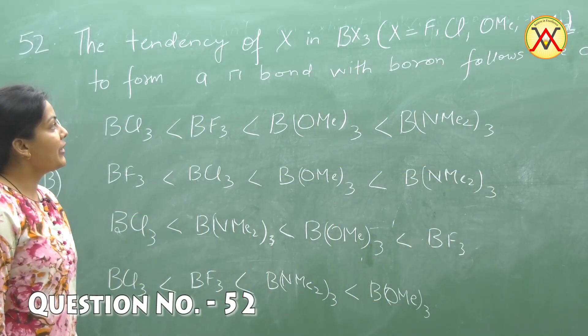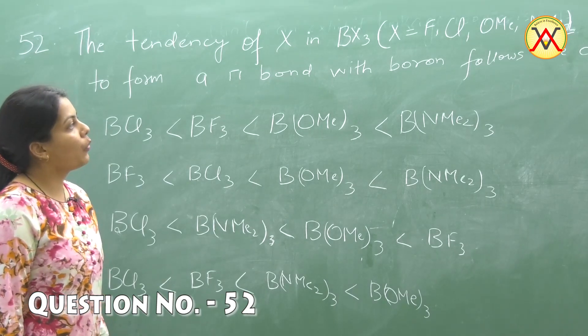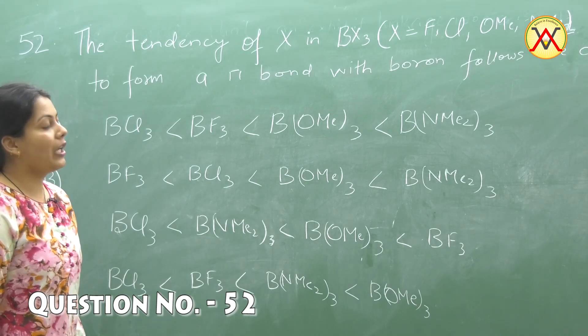Question number 52: The tendency of X in BX3, where X is a ligand (fluorine, chlorine, OME, NME2), to form a pi bond with boron follows the order.